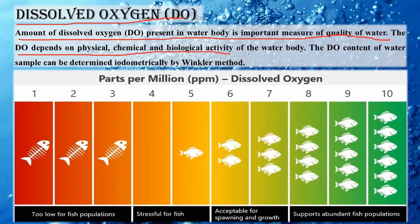DO depends on the physical, chemical, and biological activity of the water body. If temperature is very high, DO will be less because oxygen is a gas and will tend to move out of the liquid. If pressure is very high, more DO will be present because the gas gets liquefied and moves into the water. Low temperature and high pressure are preferred. pH changes and biological organisms can also affect dissolved oxygen.